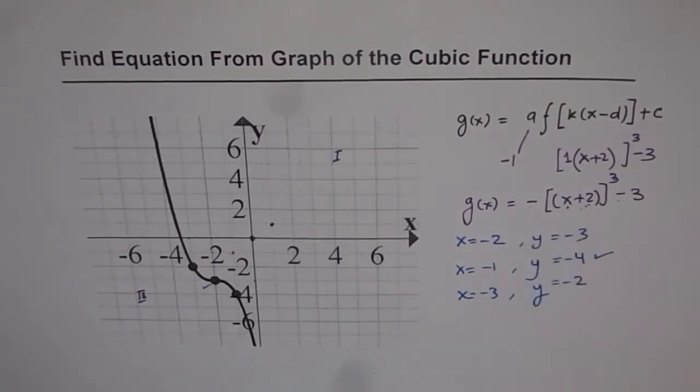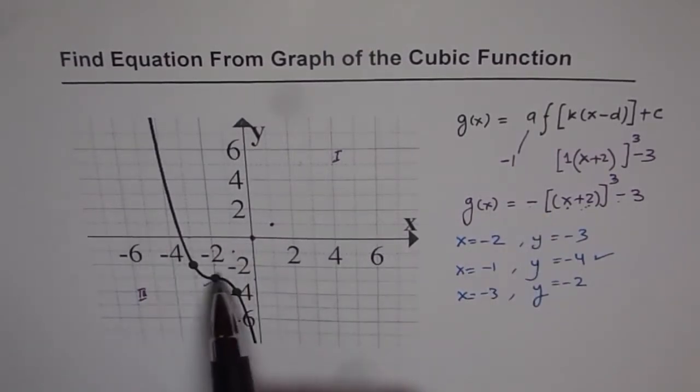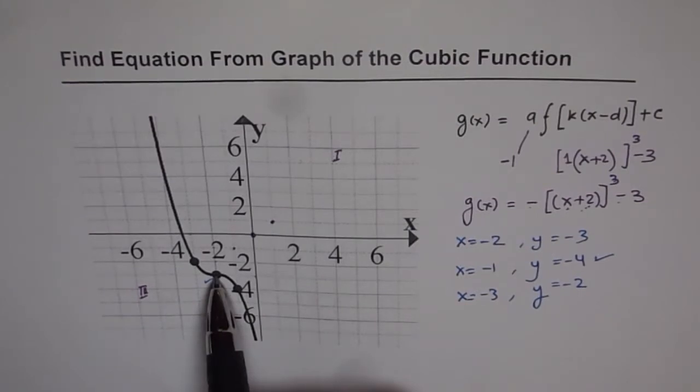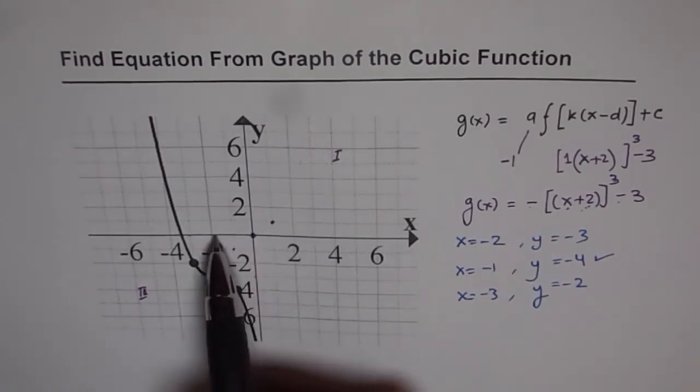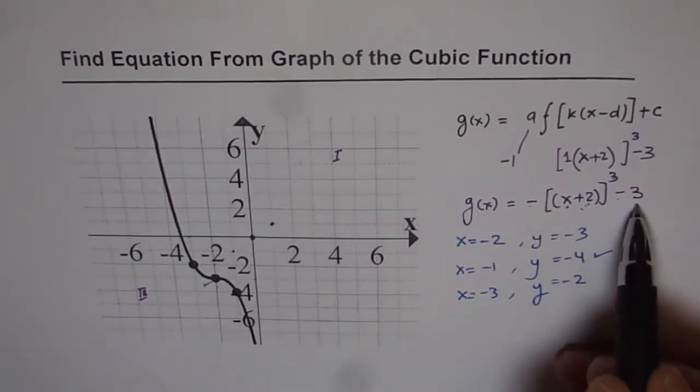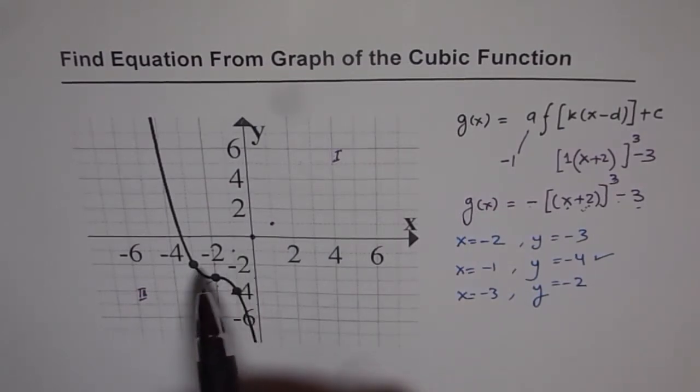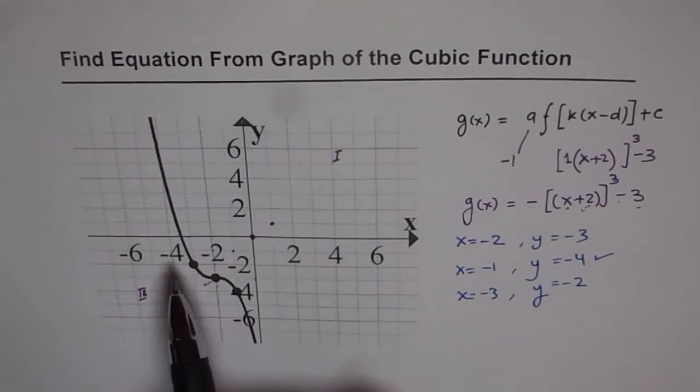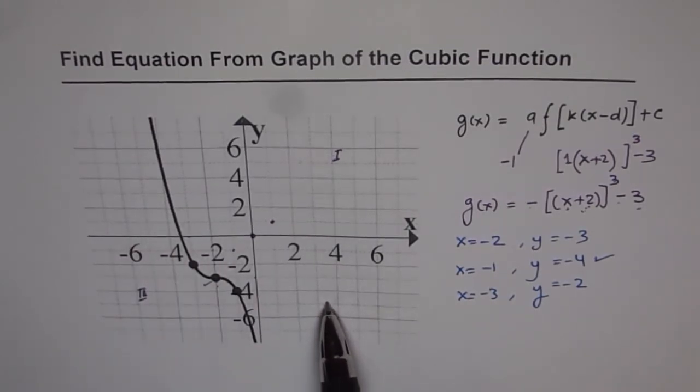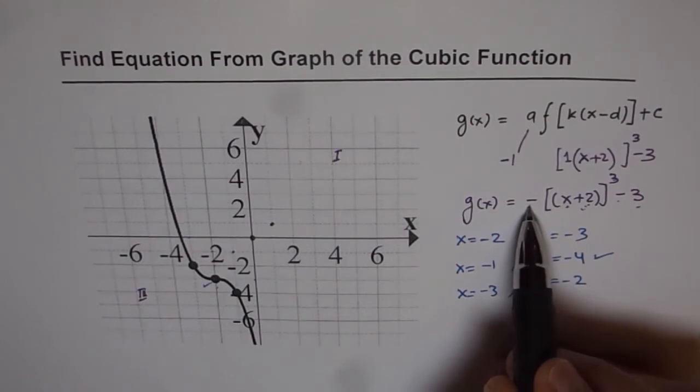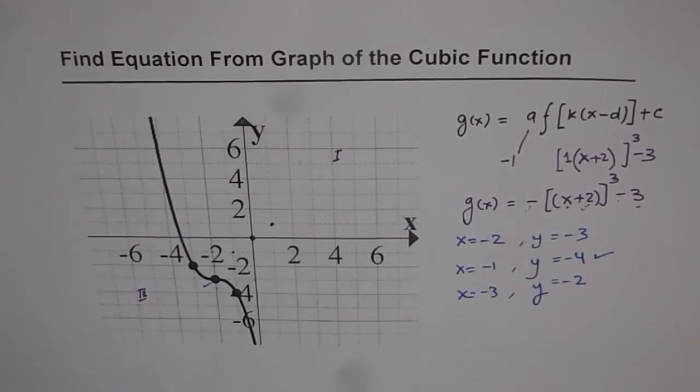I hope you understand the method of doing it. So we are going for reflection and then we check horizontal translation and vertical translation. It is shifted 2 units to the left and 3 units down. That is how we get these points, 2 and 3. And there is no stretch or compression involved. There is, of course, a reflection since the graph is going from quadrant 2 to quadrant 4, which is taken care of by this minus sign here. So that is how you can write the equation of a transformed function from the graph. Thank you.